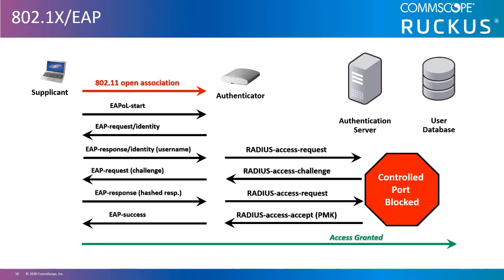If the credentials are successfully validated against the user database, the RADIUS server sends a RADIUS access accept message, which is translated to an EAP success frame at the authenticator or AP and then opens the control port to allow the supplicant's wireless client traffic to traverse the network. The supplicant can then contend for the media and begin passing traffic. At this point, most wireless clients will typically attempt to get an IP address by sending out a DHCP request.